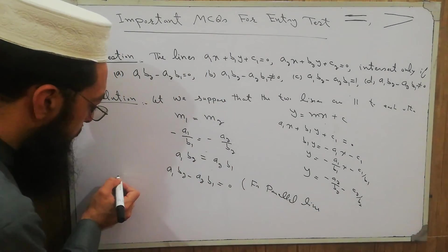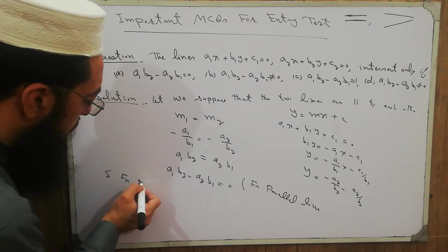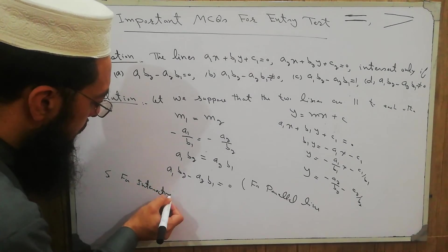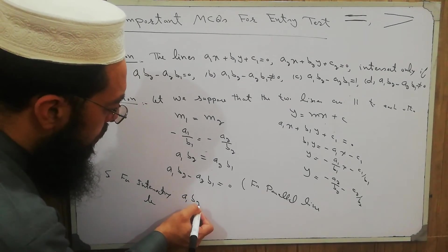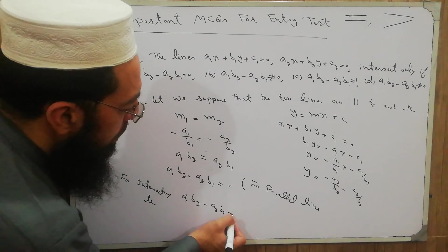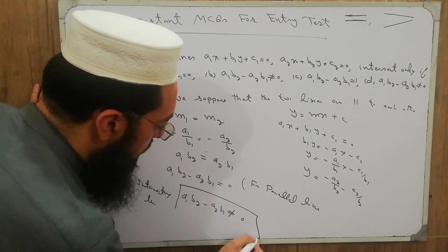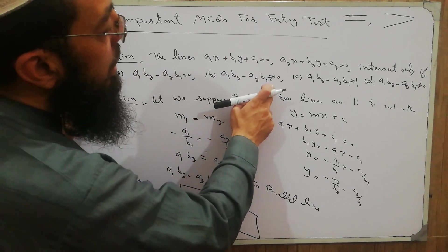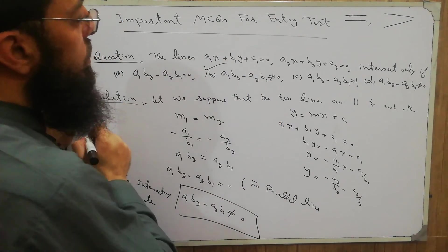For intersecting lines, the condition is a1·b2 - a2·b1 ≠ 0. So the correct answer is a1b2 - a2b1 ≠ 0, which is option (b).